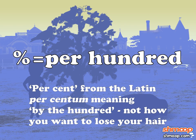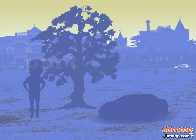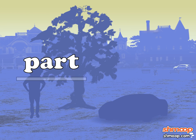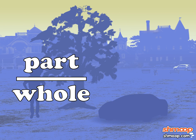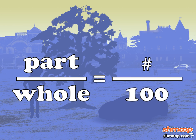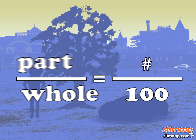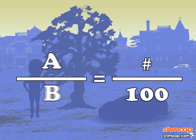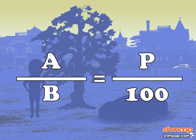Percent means per hundred. We can write an equation that states some part of the pigeons over the whole number of pigeons equals some percent, or a number over a hundred. Let's replace these words with variables: a over b equals p over one hundred.